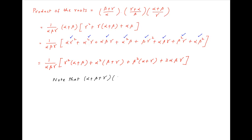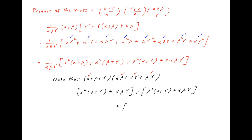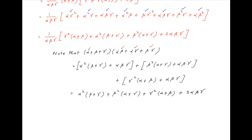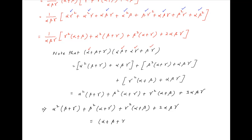Note that (alpha + beta + gamma)·(alpha·beta + alpha·gamma + beta·gamma) equals alpha²·(beta + gamma) + alpha·beta·gamma + beta²·(alpha + gamma) + alpha·beta·gamma + gamma²·(alpha + beta) + alpha·beta·gamma, which equals alpha²·(beta + gamma) + beta²·(alpha + gamma) + gamma²·(alpha + beta) + 3·alpha·beta·gamma. Subtracting alpha·beta·gamma from both sides gives the expression equal to gamma²·(alpha + beta) + alpha²·(beta + gamma) + beta²·(alpha + gamma) + 2·alpha·beta·gamma.